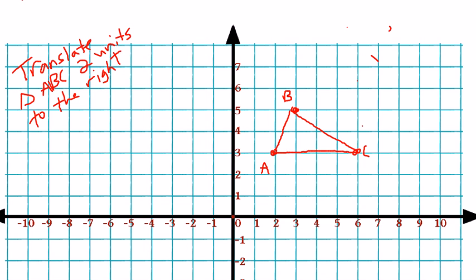Well, the easiest way to translate this entire shape would be to take each point and individually translate that point two units to the right. So we'll take point A, which is, what's the ordered pair for point A? This is 2,3. Point B is 3,5. And point C is 6,3.